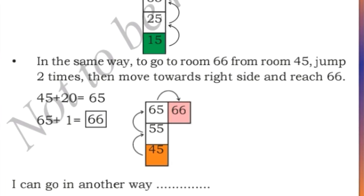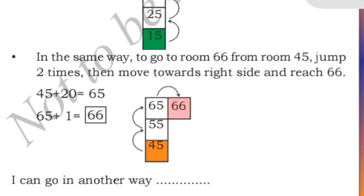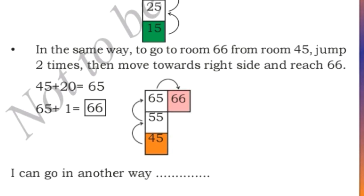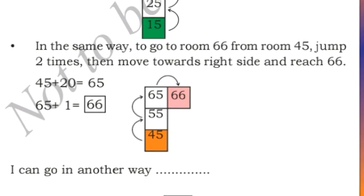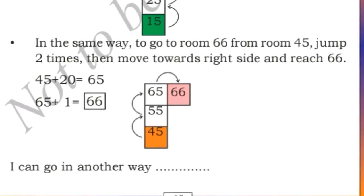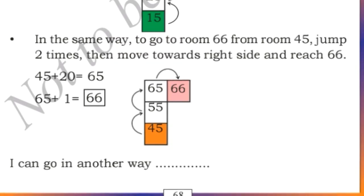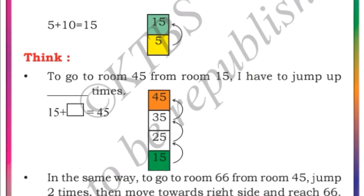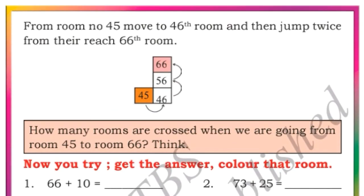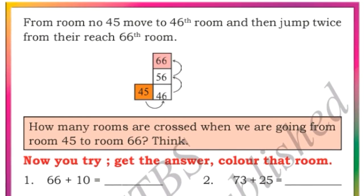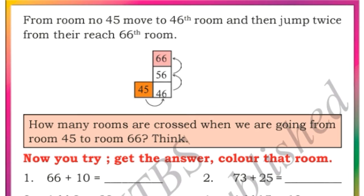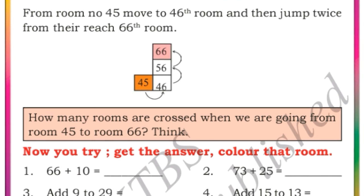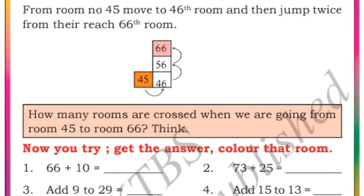In the same way, to go from room 45 to room 66: from 45 to 55 is 10 times, 55 to 65 is 20 times, and to go to 66 we need 1 more move — so we have moved 21 times. As a second approach, from 45 to 46 is 1 move, then 46 to 56 is 10 times, and 56 to 66 another 10 times — again 21 times.